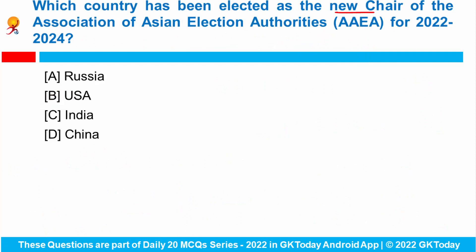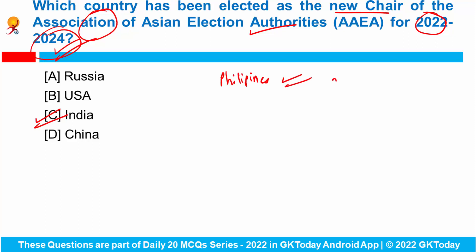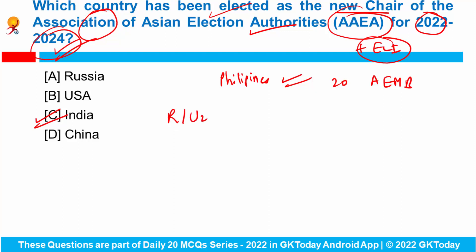Which country has been elected as the new chair of the Association of Asian Election Authorities for 2022 to 2024? India has been unanimously elected as the new chair of AAEA for 2022 to 2024. The Commission on Elections, Philippines was the previous chair. Currently 20 Asian election management bodies are members of AAEA, and the Election Commission of India is a founder member. New members include Russia, Uzbekistan, Sri Lanka, Maldives, Taiwan and the Philippines.